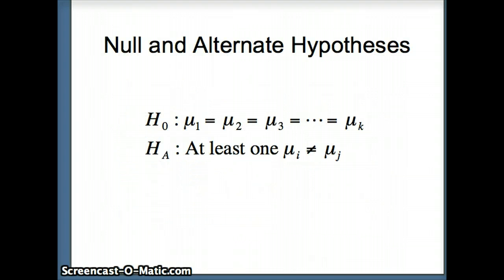So here are our null and alternate hypotheses. H0 is all of the means are the same, so all of the samples come from populations with identical means. If that's not true, then we should find at least one pair of means that are different.